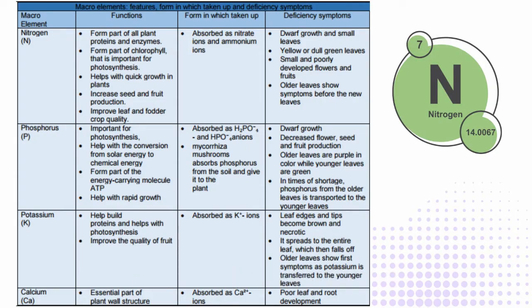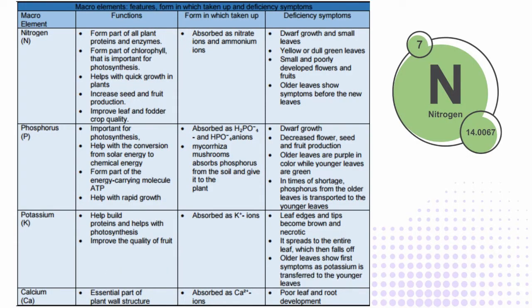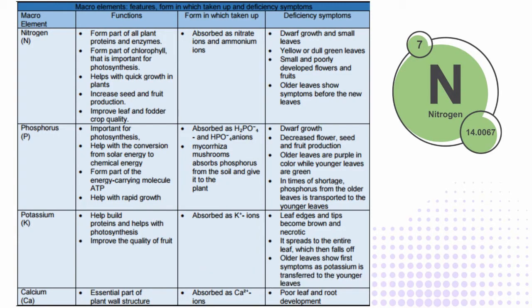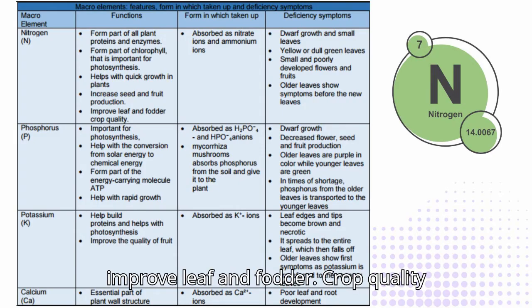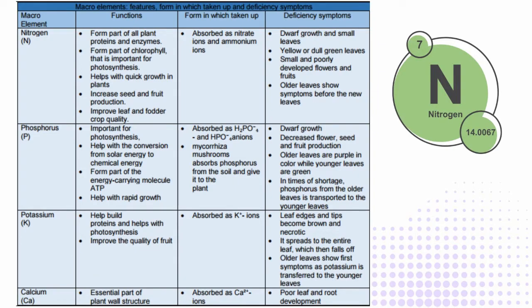Nitrogen (N): Forms part of all plant proteins and enzymes, forms part of chlorophyll which is important for photosynthesis, helps with quick growth in plants, increases seed and fruit production, and improves leaf and fodder crop quality. Absorbed as nitrate ions and ammonium ions.